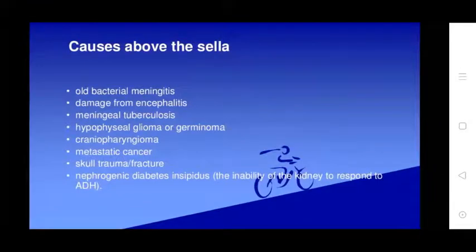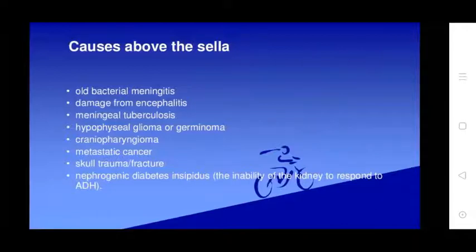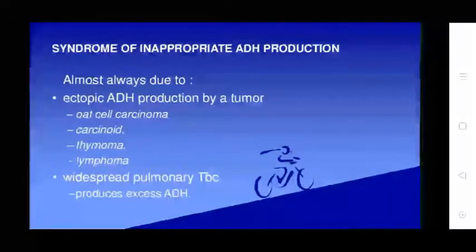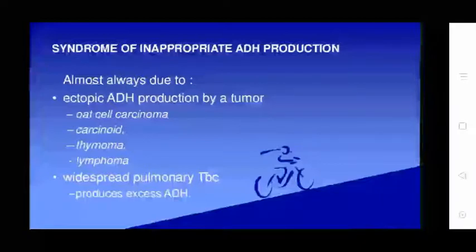Other causes of diabetes insipidus above the sella include bacterial meningitis, encephalitis, tuberculous meningitis, craniopharyngioma, germinomas, meningiomas, metastatic cancer, and skull trauma. Nephrogenic diabetes insipidus also exists. The syndrome of inappropriate ADH production (SIADH) is almost always due to ectopic ADH production by a tumor — including small cell carcinoma, carcinoid, thymoma, lymphoma, and widespread glomerular TB — all of which can produce excess ADH.